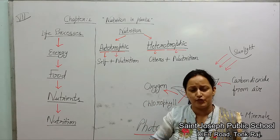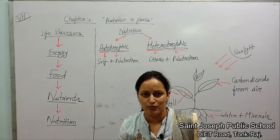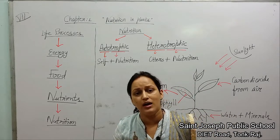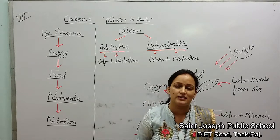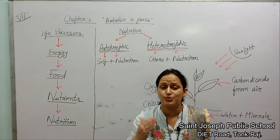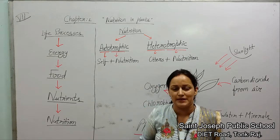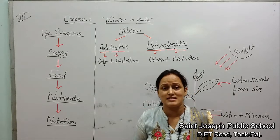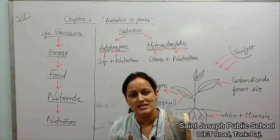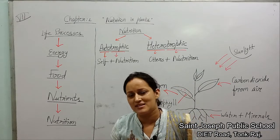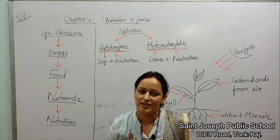In the food there are seven nutrients. Let's recall their names: carbohydrates, fat, protein, vitamins, minerals, water, and roughage.